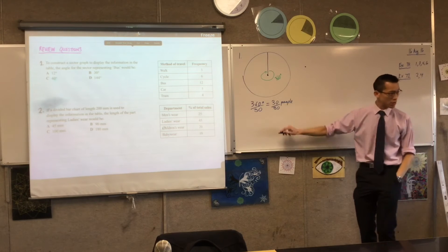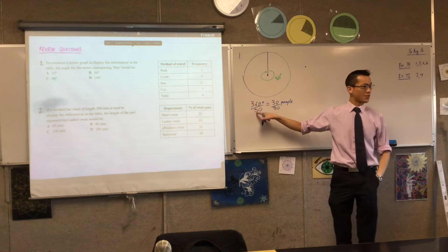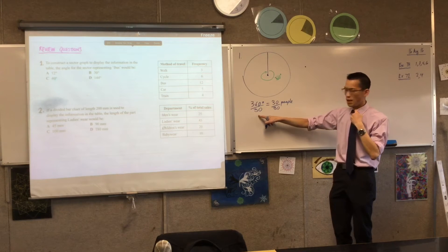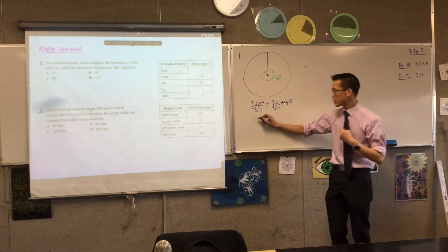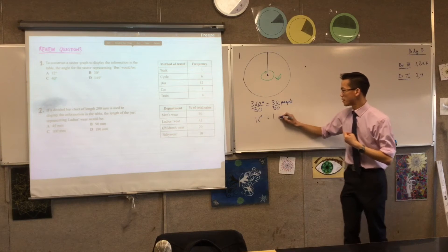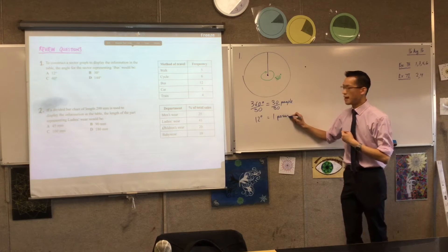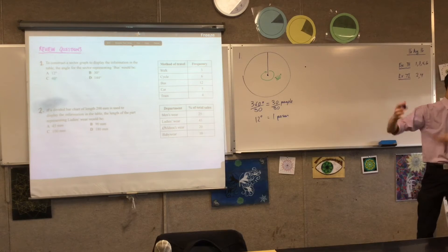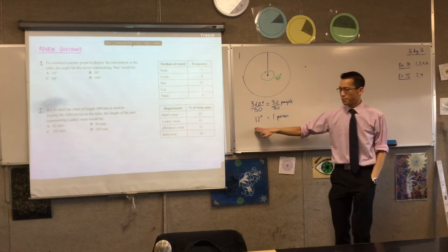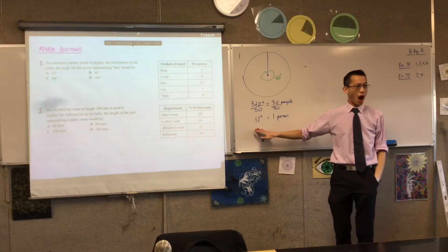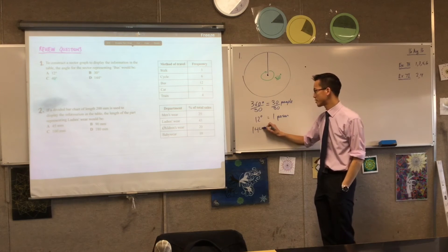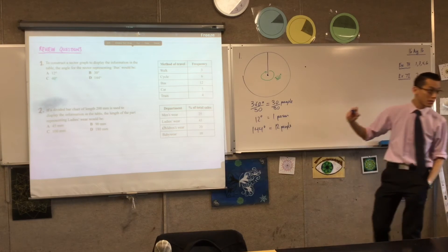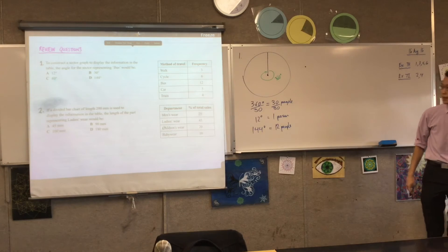So let's actually do this working now because this will be useful to us. 360 divided by 30 is? That's 12 degrees, right? 12 degrees for one person. So having gone down to 1, I'm using 1 so that I can get back up to 12. So I'm going to multiply both sides by 12. 12 times 12 is 144 degrees. Is that one of the answers? Yes. Cool. Option D.